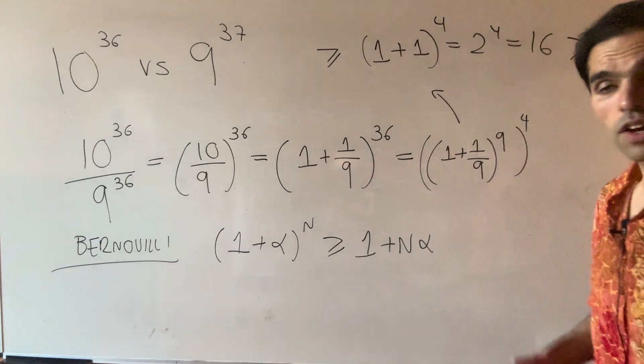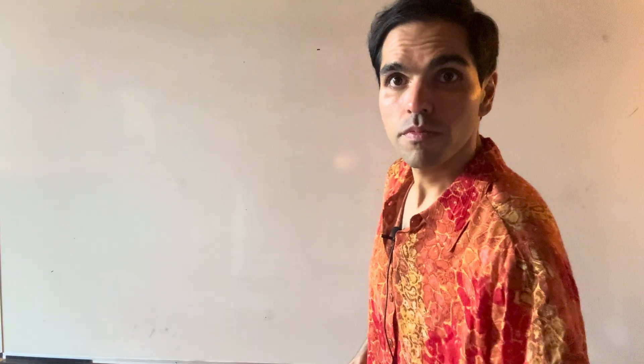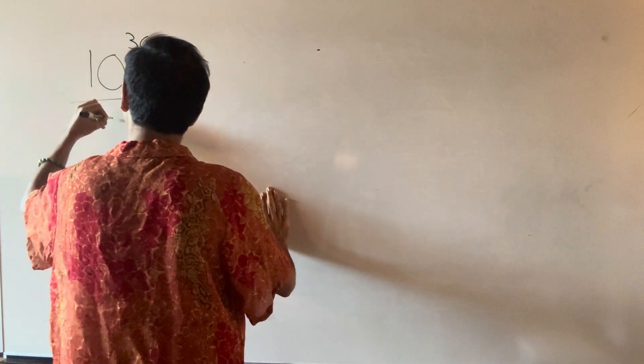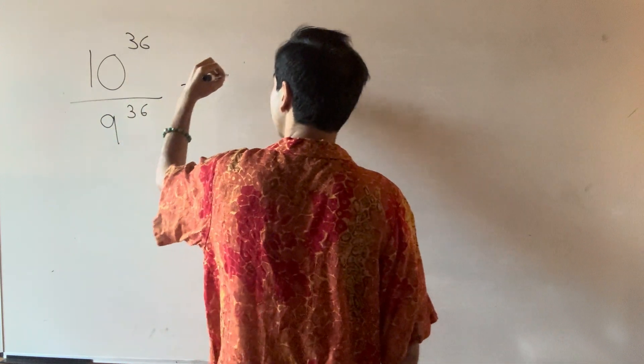And so combining everything, we get the following. So now we get 10^36 over 9^36, that is greater than 9.